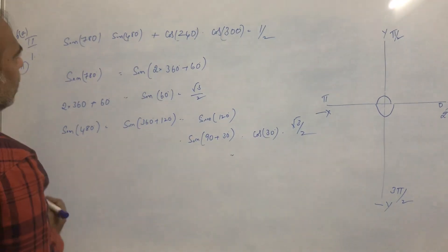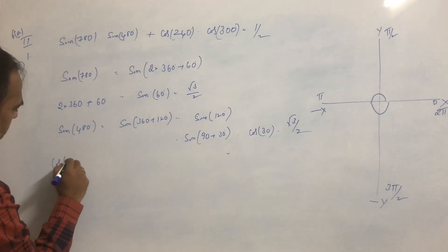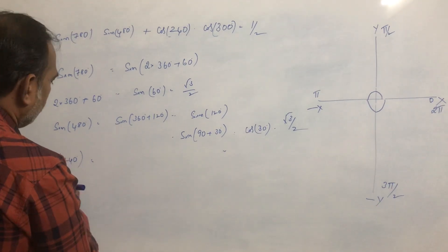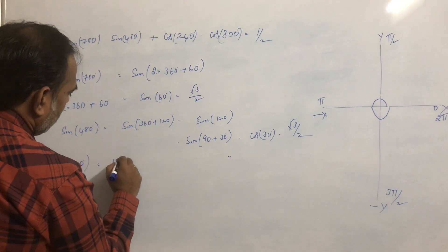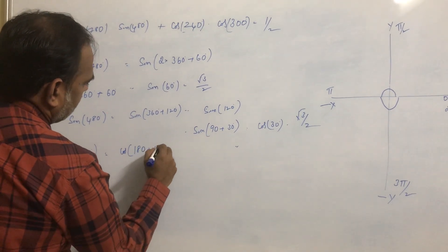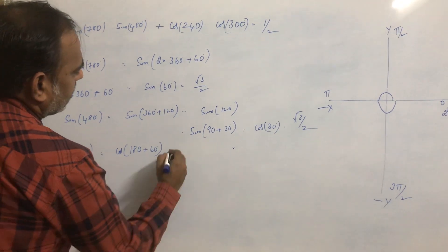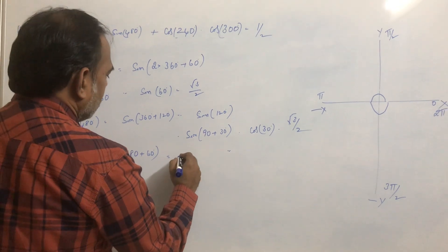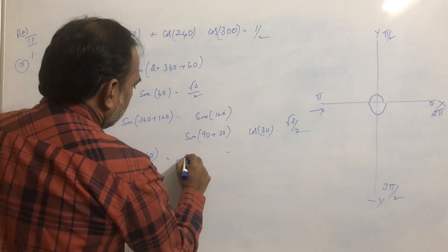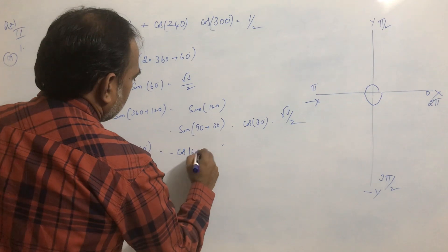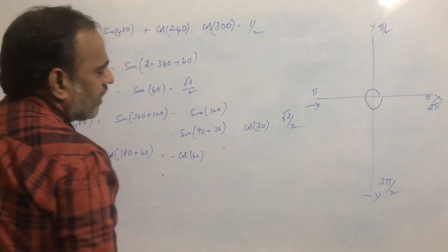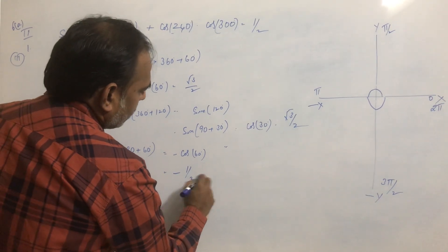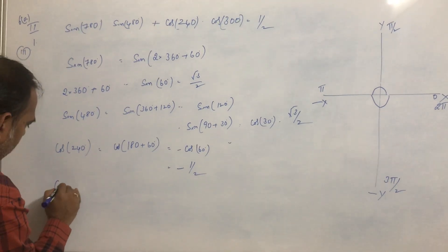Next, take cos240. cos240 can be written as cos(180 + 60). This is in the third quadrant, where cosine is negative. So this equals −cos60°. The value of cos60° = 1/2, so cos240 = −1/2.